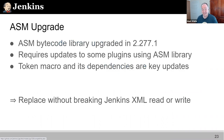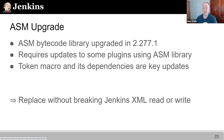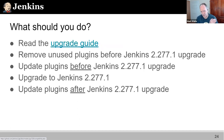The ASM upgrade is one I've been aware of. ASM is a bytecode manipulation library used in the product in various ways. In this particular case, we brought in a new version of the ASM bytecode library and the token macro plugin had to be updated to adapt to it. If you don't have the latest version of token macro - you can still install it on 2.263 - but if you don't have it when you upgrade, you may get messages, warnings, and failures described in the upgrade guide. So: read the upgrade guide, remove unused plugins, update plugins before upgrading Jenkins, upgrade Jenkins, then update plugins again.